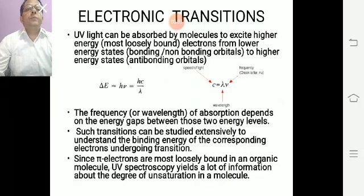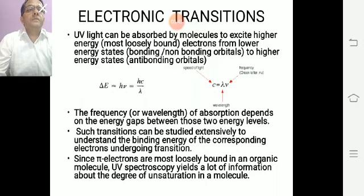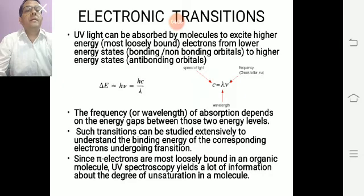Electronic transitions: UV light can be absorbed by a molecule to excite higher energy, most loosely bound electrons from a lower energy state — that is bonding or non-bonding orbitals — to a higher energy state, that is anti-bonding orbitals. The difference in energy equals hν = hc/λ, where c = λν. C is the speed of light, λ is the wavelength, and ν is the frequency. The frequency or wavelength of absorption depends on the energy gap between those two energy levels, and such transitions can be studied to understand the binding energy of the corresponding electrons undergoing transitions.